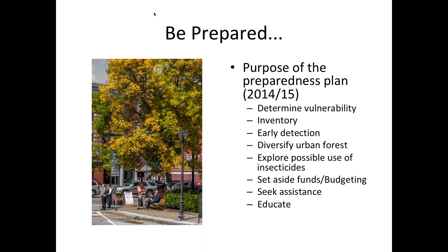Prepared budget planning means you know how many ash trees you have, what diameter they are, and what it's going to cost to remove them — at close to a 99.7% loss rate for towns that don't chemically treat, you can get a pretty good grip on removal costs and then work with your city council or town board to figure out how you'll budget for that.